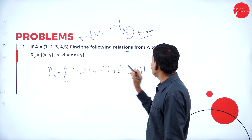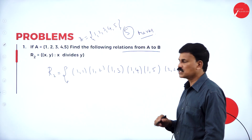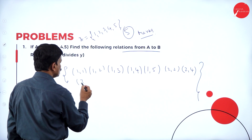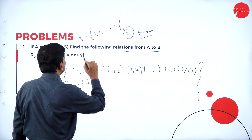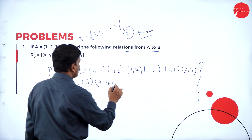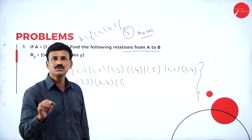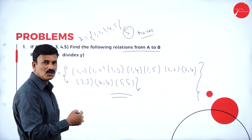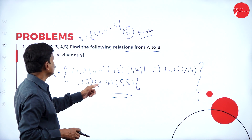Continuing: 3 does not divide 1 or 2; 3 divides 3; 3 does not divide 4 or 5. For 4: 4 divides 4 only. For 5: 5 divides 5 only. Therefore R2 = {(1,1), (1,2), (1,3), (1,4), (1,5), (2,2), (2,4), (3,3), (4,4), (5,5)}.